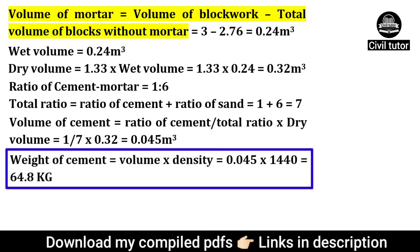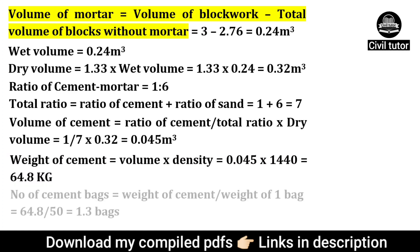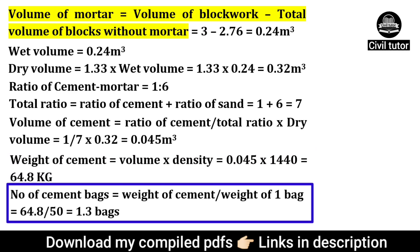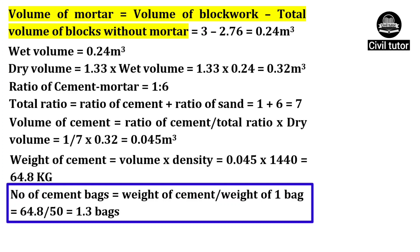Total weight of cement will be equal to volume of cement multiplied by density of cement. As we know, the density of cement is equal to 1440 kg per cubic meter. So on substituting these values, the total weight of cement will be equal to 64.8 kg. Hence, the number of cement bags will be equal to weight of cement divided by weight of one bag. Weight of cement is calculated as 64.8 kg and weight of one bag of cement is 50 kg. So the number of cement bags will be equal to 1.3 bags.